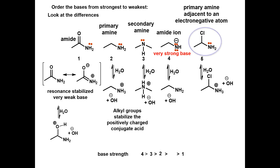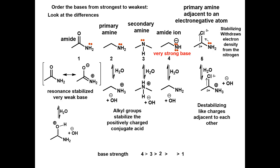Compound 5 has an electronegative chlorine that inductively pulls electron density towards itself, decreasing electron density on the nitrogen. This will stabilize the lone pair on the nitrogen and destabilize the positively charged conjugate acid, making it the fourth strongest base.